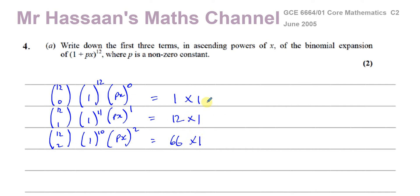1 to the power of all of these is 1. And then, Px to the power of 0 is 1. And Px to the power of 1 is Px. And Px all squared is P squared X squared.